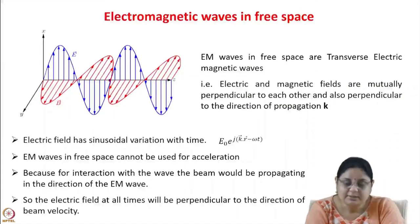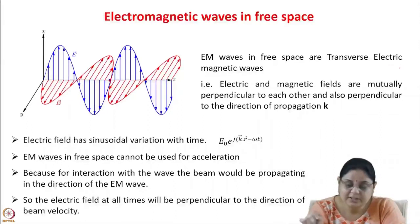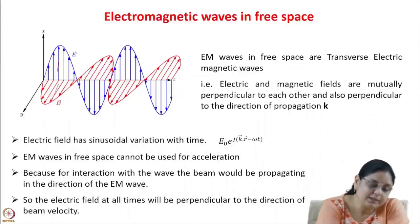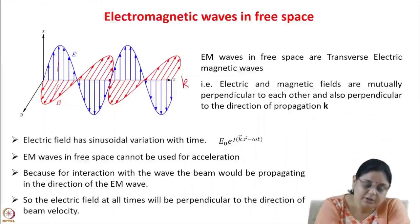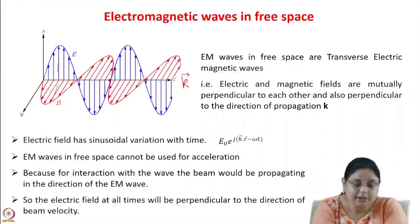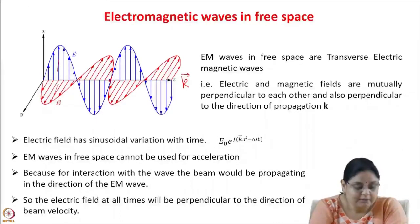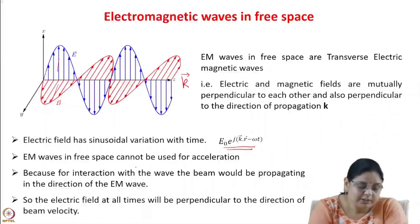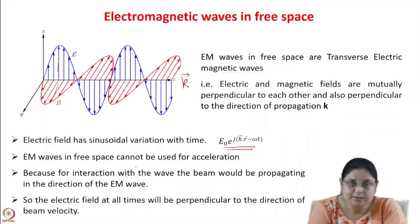Summarizing again from the last lecture: electromagnetic waves in free space are transverse electromagnetic (TEM) waves, where the electric field, the magnetic field and the propagation constant are mutually perpendicular to each other. The electric field has a sinusoidal variation with time.